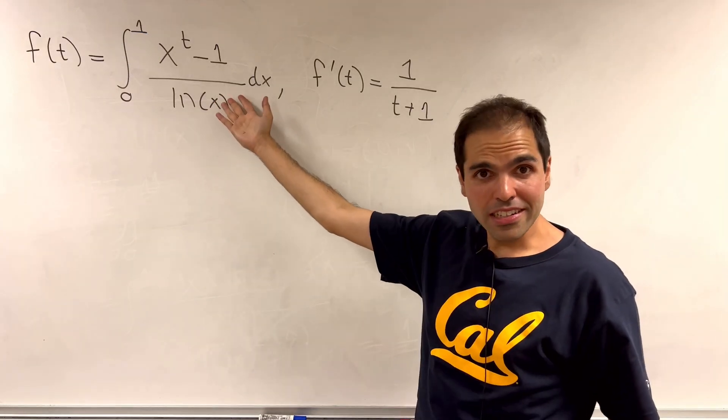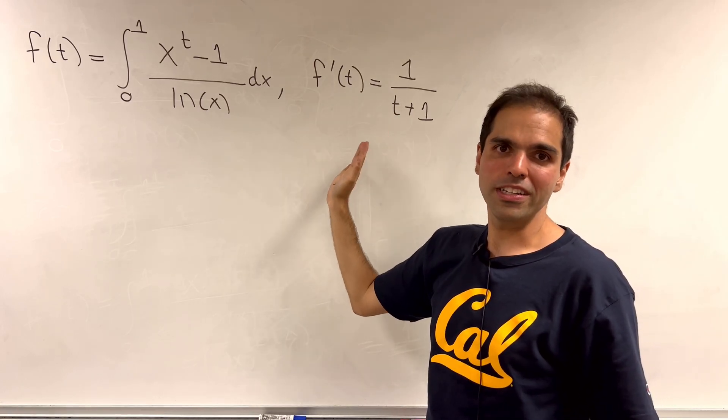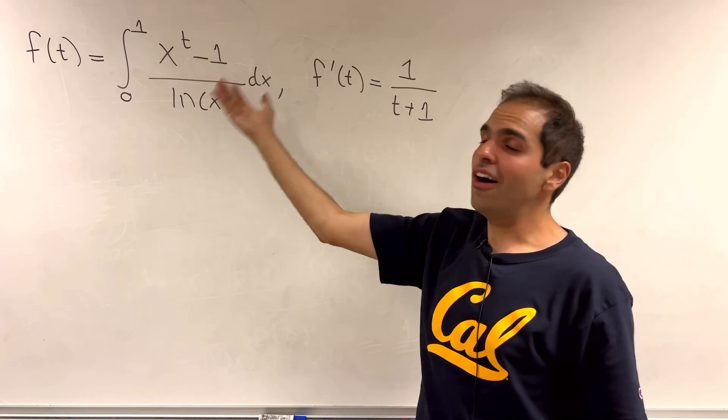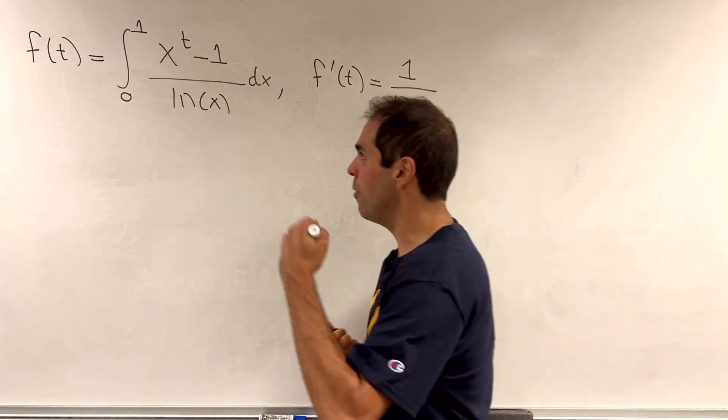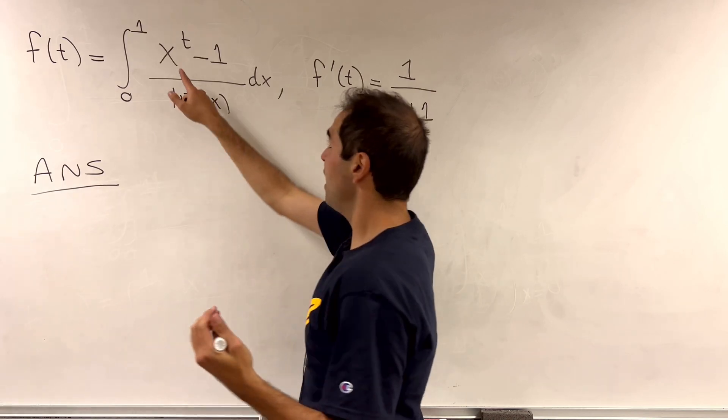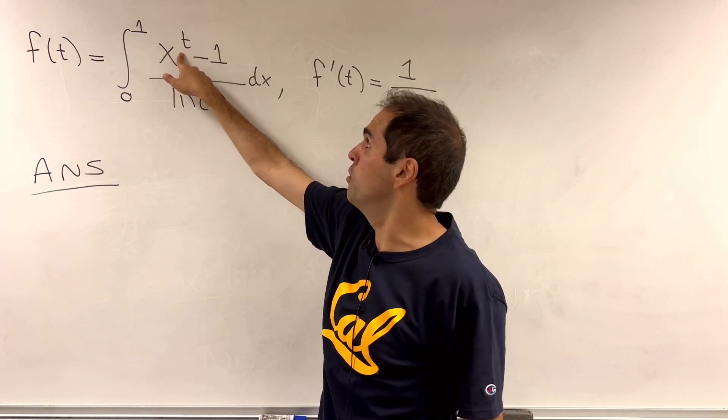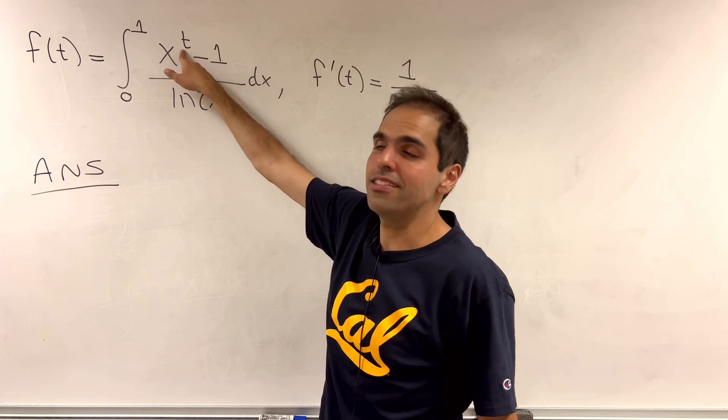So this is our function, and we just calculated the derivative to be 1 over t plus 1. How does that help us solve a problem? Well, if you think about it, our answer is nothing other than f of 2, because you just replaced t by 2.